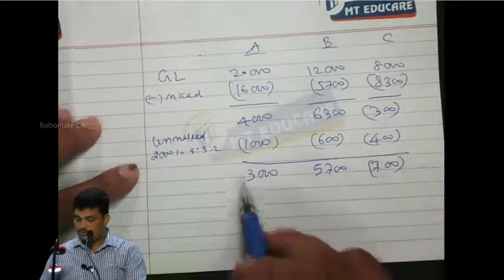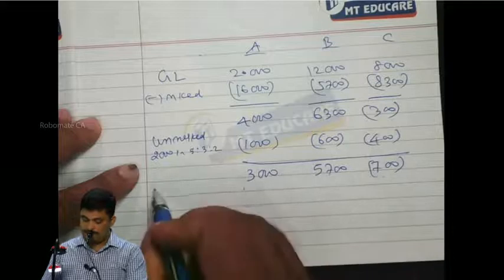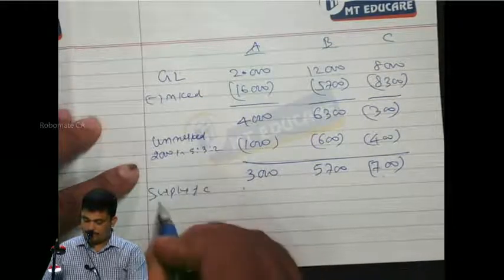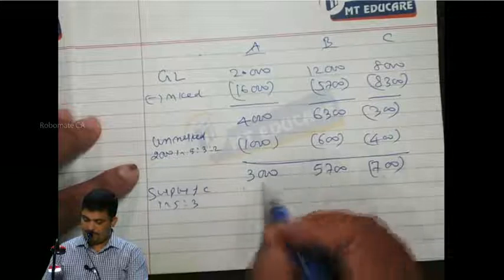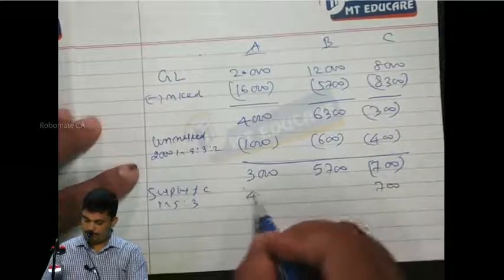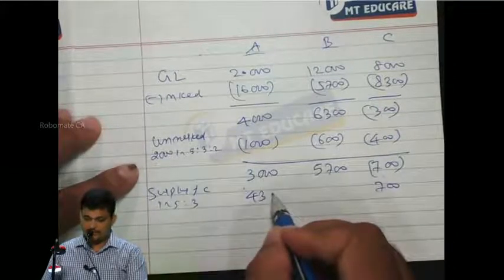Surplus of C should go to A and B in ratio 5:3, giving 430 each.